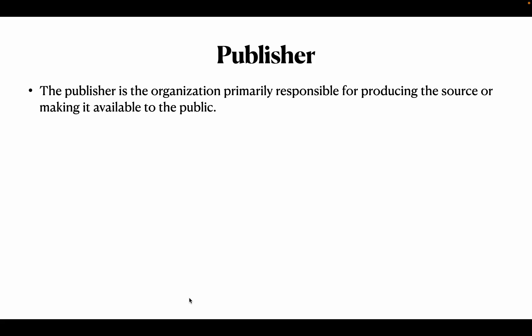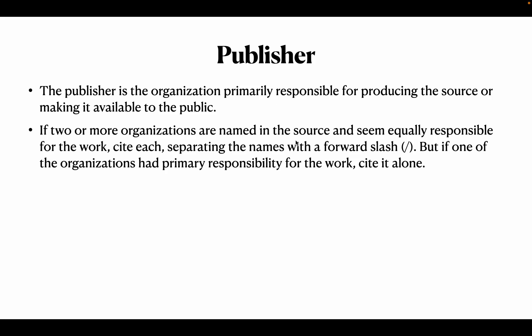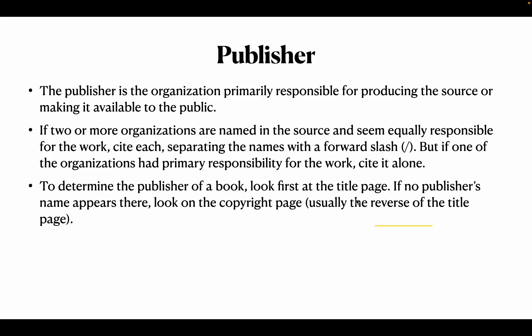Now we have talked about author, the source, and the various containers and their versions. Next is publisher. The publisher is the organization primarily responsible for producing the source — the book or periodical — and making it available to the public. If two organizations are equally responsible, cite each of them, separating the names with a forward slash. But if one has more responsibility, you don't have to mention the other.